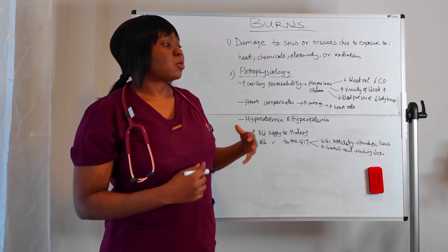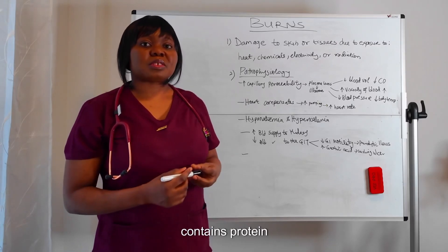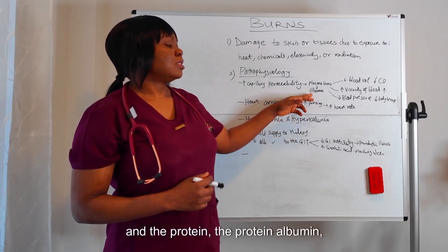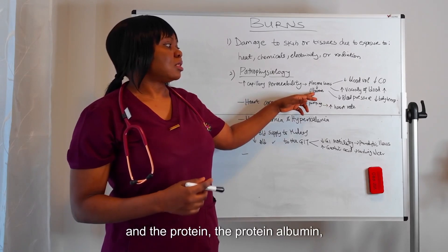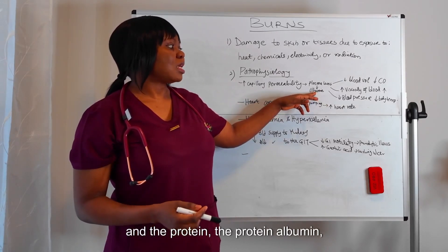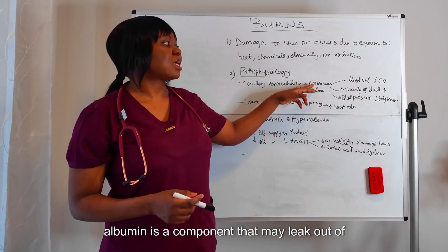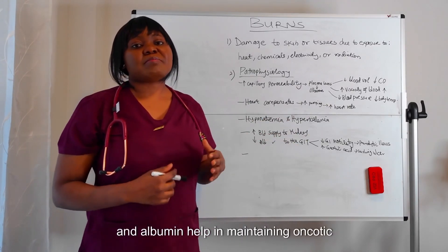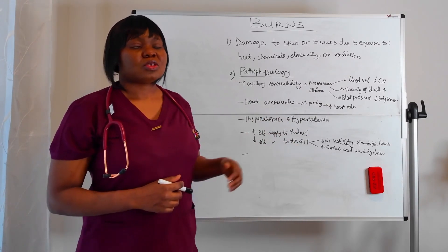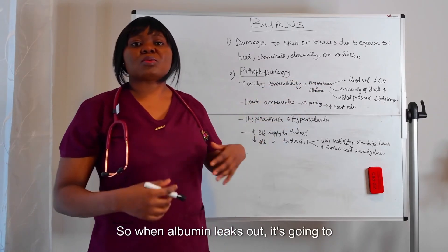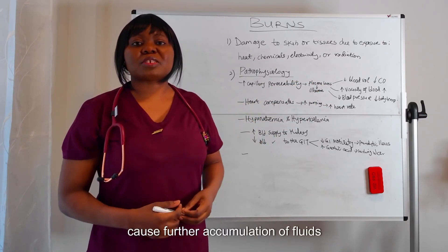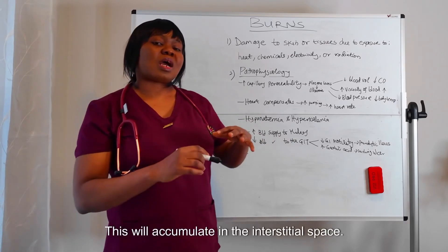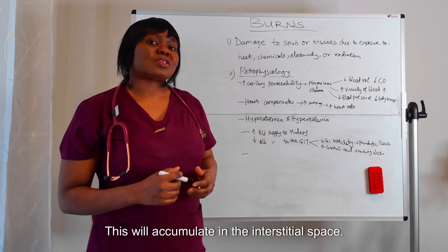Also, plasma contains proteins like albumin and immunoglobulin. Albumin is a component that may leak out of the plasma. Albumin helps in maintaining oncotic pressure. So when albumin leaks out, it is going to cause further accumulation of fluids, which is what we call edema. This will accumulate in the interstitial space.